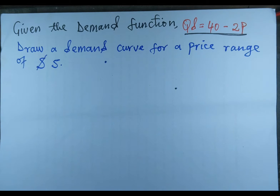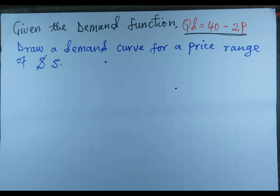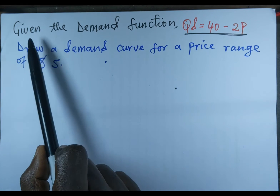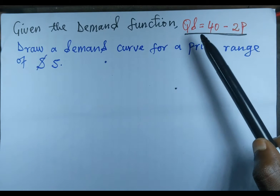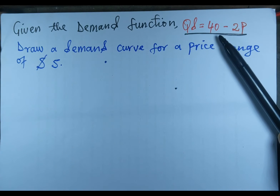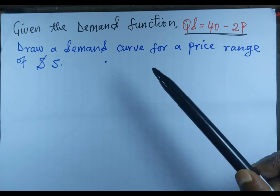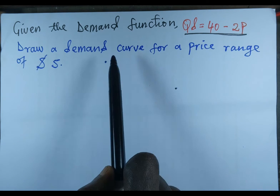Welcome to another session of Sam's Economics Tutorials. In today's video I'm going to teach you how to draw a demand curve from a demand function — that is, when a demand function is given, you will be able to draw a demand curve. We have taken this example: given the demand function Qd = 40 minus 2P, the question says we should draw a demand curve.